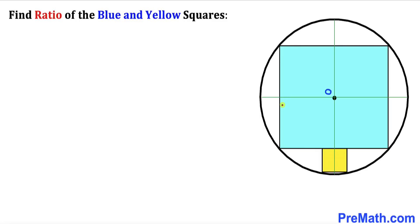Welcome to pre-math. In this video we have a blue square as well as a yellow square that are fully inscribed in a circle, as you can see in this diagram. O is the center of this circle, and we are going to find the ratio of the blue and yellow squares.